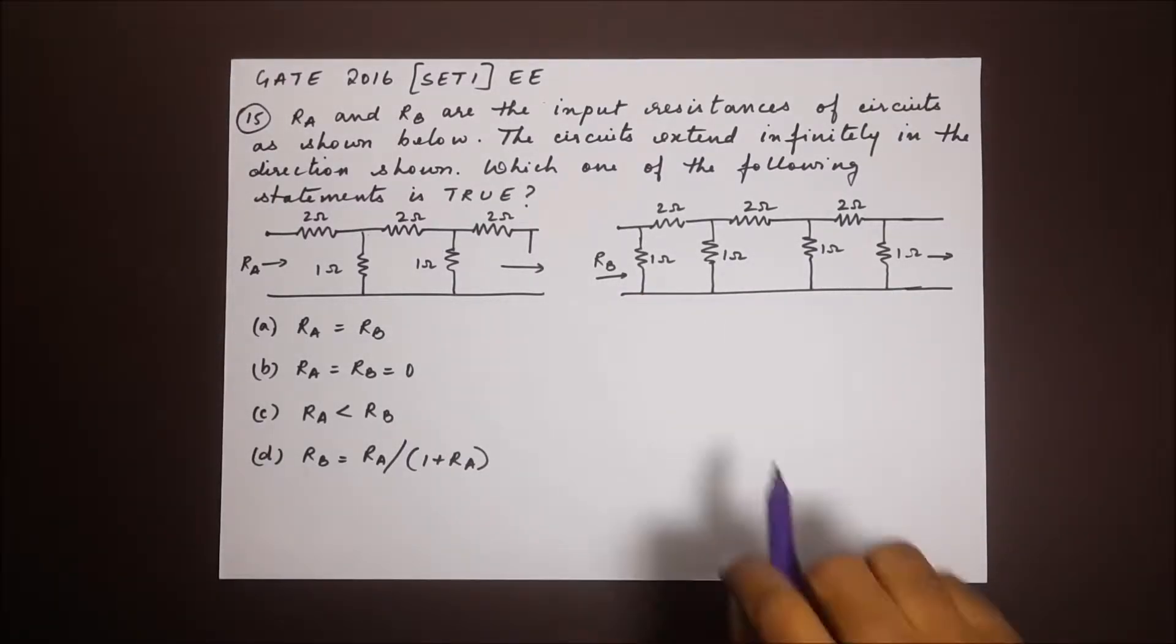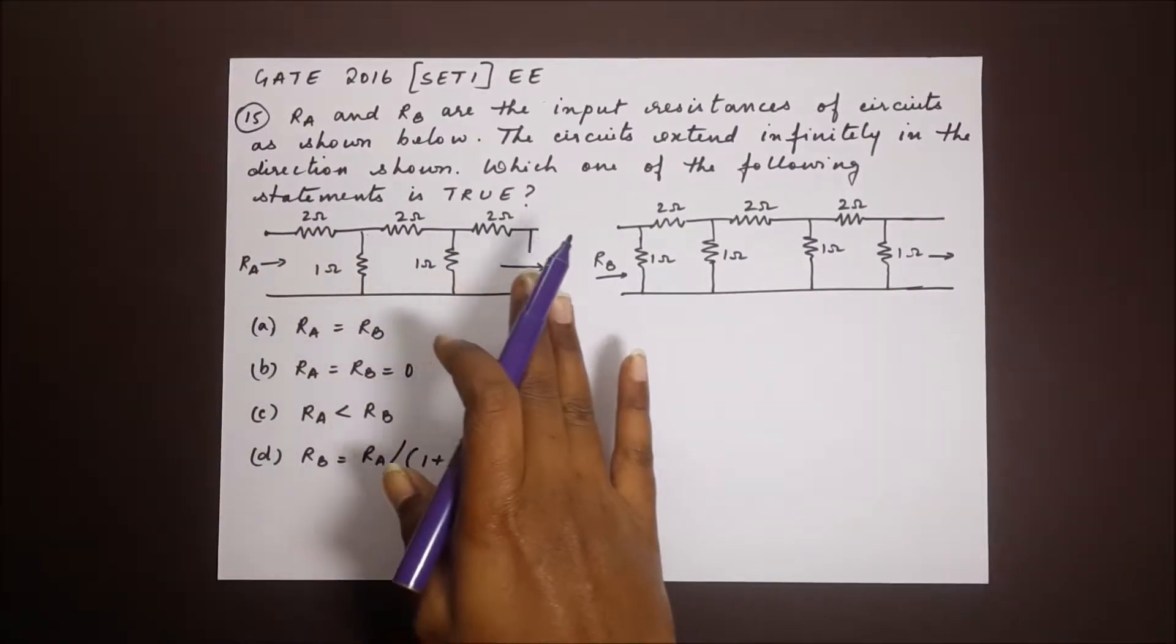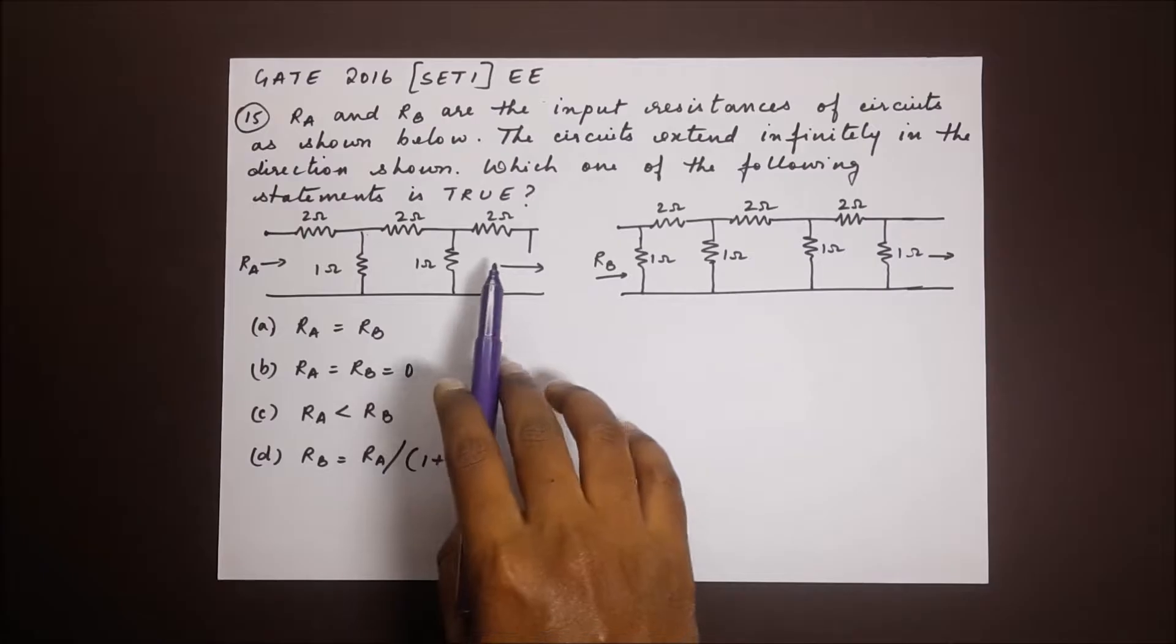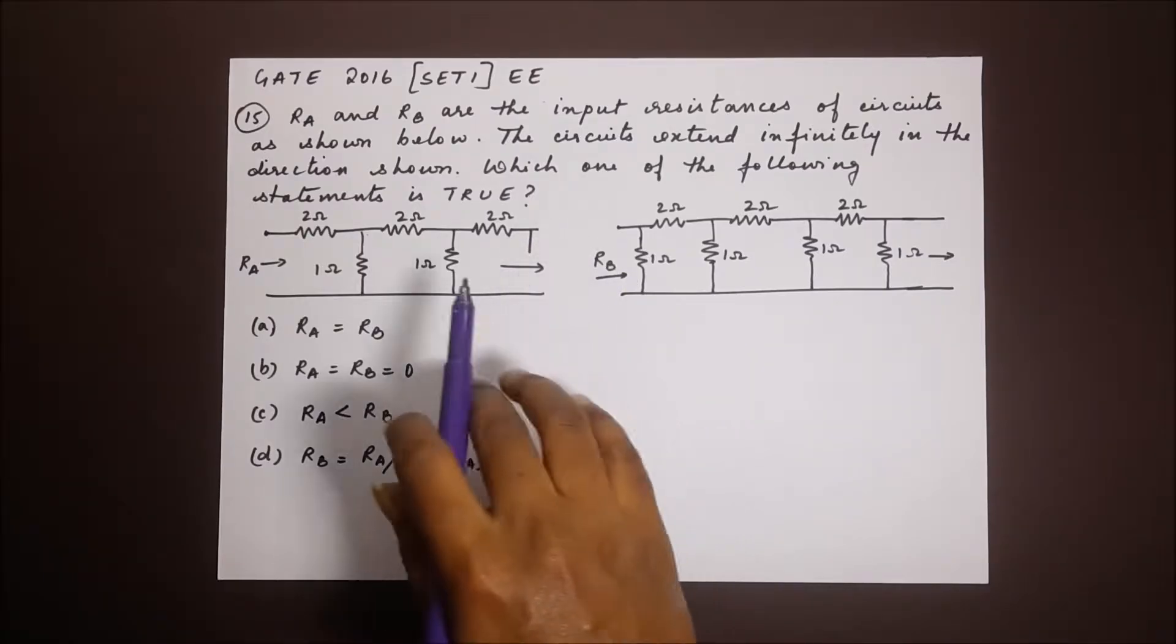The circuits extend infinitely in the direction shown. So they continue on this way. So this circuit will continue on with one ohm resistor here, two ohm resistor there and so on.